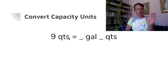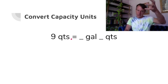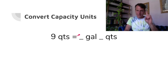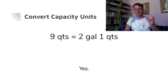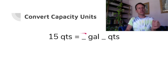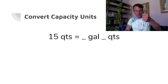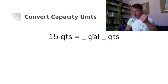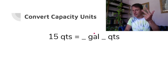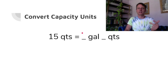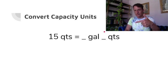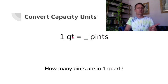Going the other way: nine quarts — we decompose out four to make a gallon, another four to make a gallon, leaving one, so two gallons and one quart. Fifteen quarts: four, eight, twelve — counting quarts per gallon — that leaves three left over, so three gallons and three quarts. One quart is how many pints?